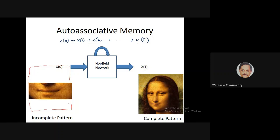After capital T time steps, hopefully the sequence of vectors converges to some final state. That final state is the complete picture. The network starts from an initial state corresponding to an incomplete image, operates on that vector, and the vector is updated through time. After some T time steps, the sequence converges, and the vector it converges to corresponds to the complete image — the complete Mona Lisa.